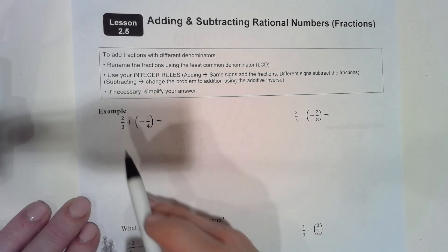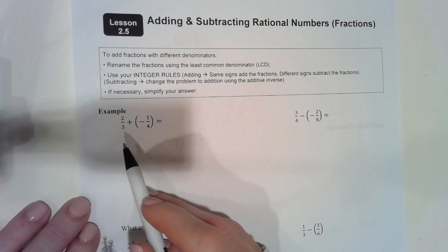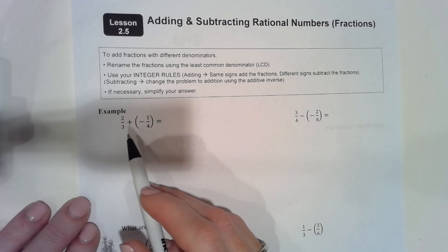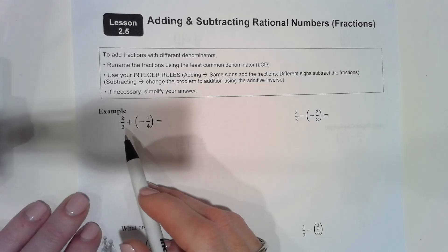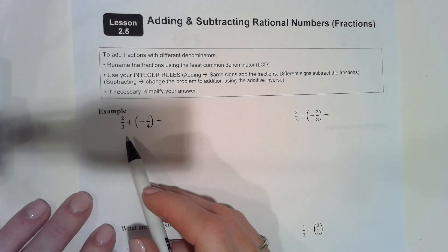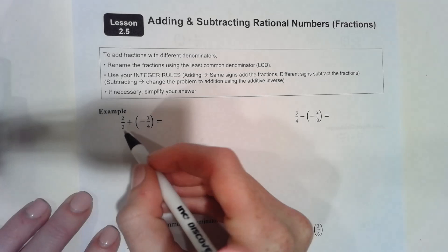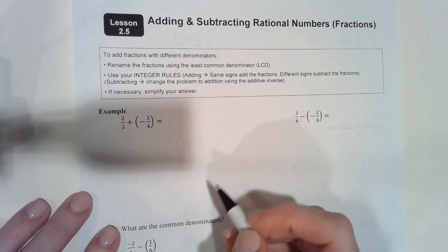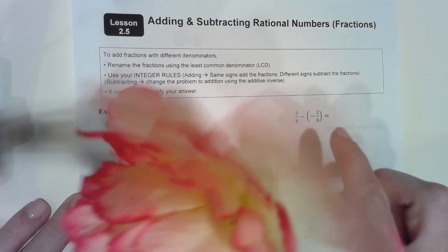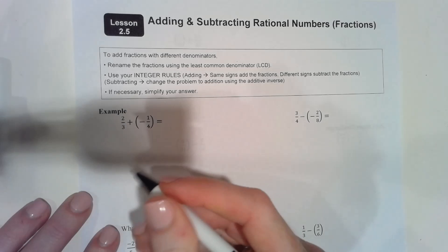One way to find common denominators: look at the two denominators and decide if you can make the smaller one into the bigger one — meaning, can I multiply something by three to get four? In this case I can't, so a really good trick is to always multiply the two bottom numbers together.